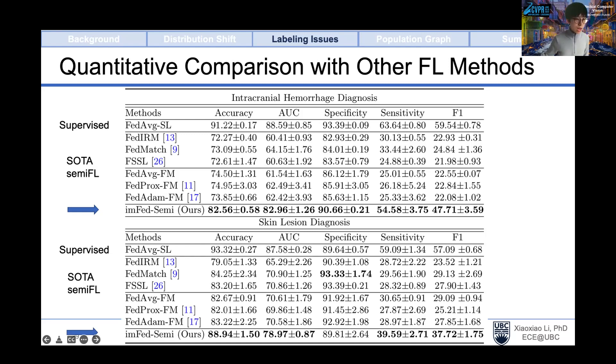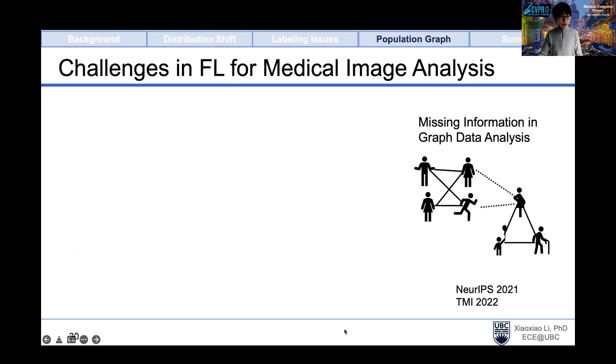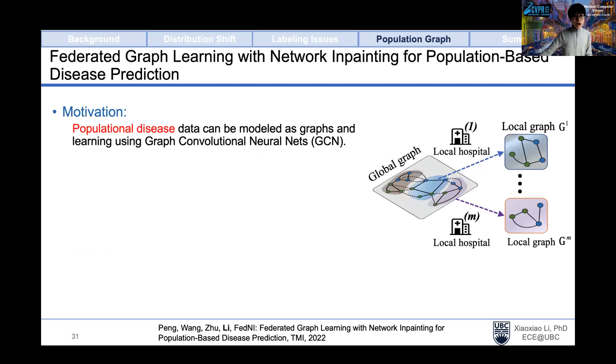Last, let's talk about the challenge of deploying federated learning on population graph. When we deal with real medical data, comparing with natural image data, we have more information. For example, in population disease analysis, we can have the patient's demographic data. In such a way, data can be modeled as graphs where the links can be learned as the similarity of patient's demographic information. Once built a graph, we can use graph convolutional neural network, in short GCN, to learn the graph prediction.